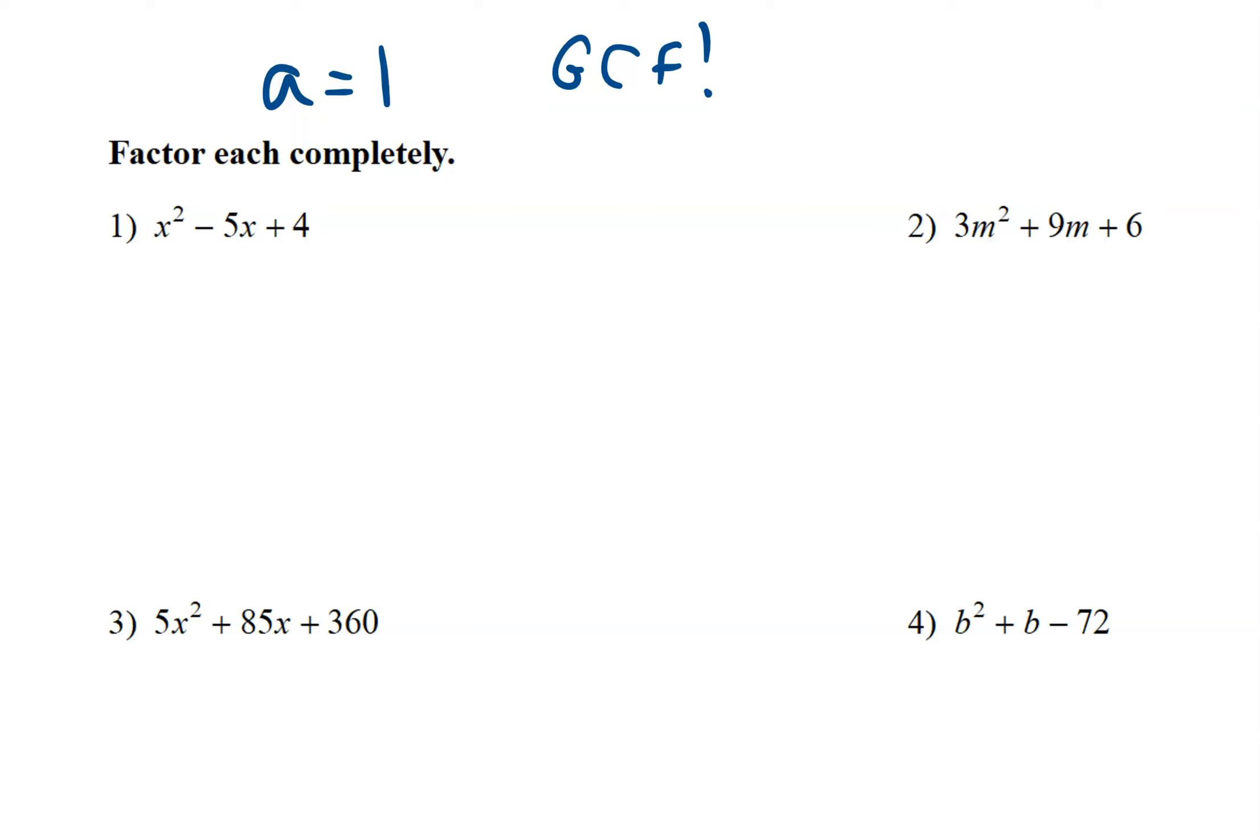So on number 1, we have 1x squared, so we're going to draw our parentheses, x times x. Now we need numbers that multiply to give us 4 and add to give us negative 5. So if they multiply to give you a positive, they have to be the same sign. Since these add to give us a negative, we know they're both going to be negative.